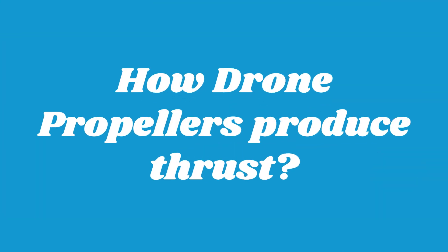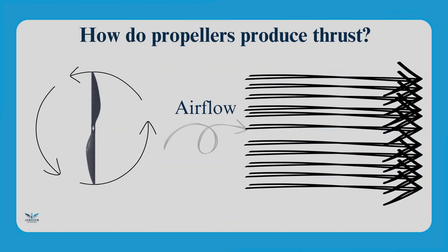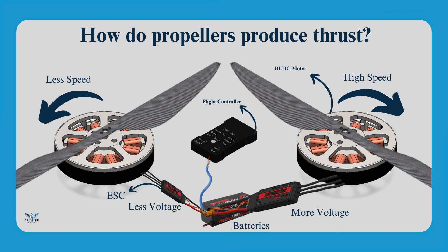Let's get started. How do drone propellers produce thrust? Propellers are devices that transform rotary motion into linear thrust. Drone propellers provide thrust by spinning and creating an airflow, which results in a pressure difference between the top and bottom surfaces of the propeller. This accelerates a mass of air in one direction, providing thrust. The more the speed of the propeller, the more the thrust generation. To control flight, the propeller speed is adjusted by changing the voltage supply to the motor, a process handled by an electronic speed controller, or ESC.